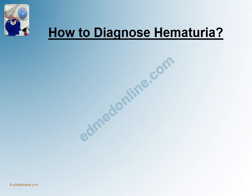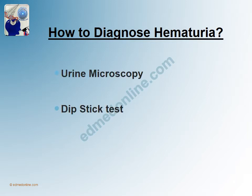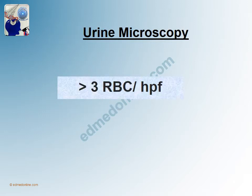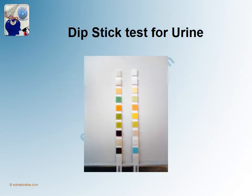Now how to diagnose hematuria? This is important because hematuria is presence of RBCs and it may signify something sinister. This needs to be distinguished from the other less sinister causes of reddish discoloration of urine. The two tests which are very useful are urine microscopy and a dipstick test. On urine microscopic examination, hematuria is defined as presence of more than three RBCs per high power field. Anything less than that is not termed as hematuria.